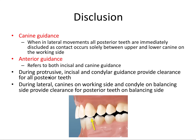As a summary: during protrusive movements, incisal and condylar guidance — the anterior and posterior determinants of occlusion — together provide clearance for all posterior teeth, which are separated as the jaw moves forward. During lateral movements, the canines on the working side and the condyle on the balancing side provide clearance for posterior teeth on the balancing side — the side the mandible is moving away from. This is the concept of mutual protection.